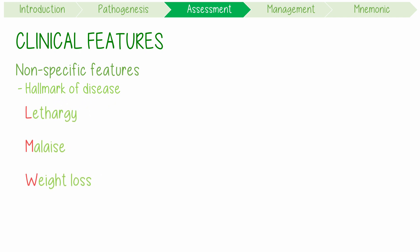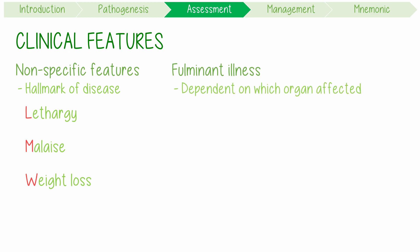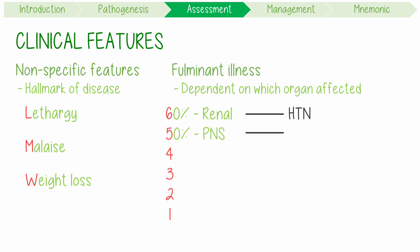Unfortunately, this disease rapidly progresses to a fulminant illness, with sequelae dependent on which organs are involved. I remember 6, 5, 4, 3, 2, 1: 60% of people get renal disease manifesting with hypertension. 50% get peripheral nervous system disease like mononeuritis multiplex, an asymmetric damage to two or more peripheral nerves.